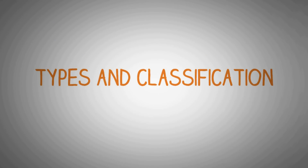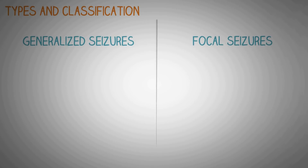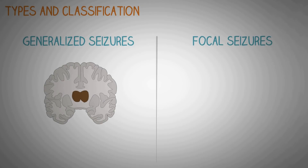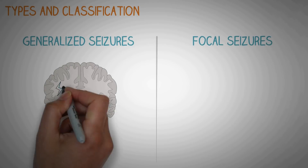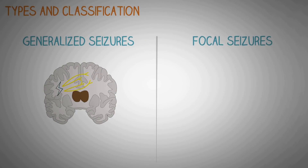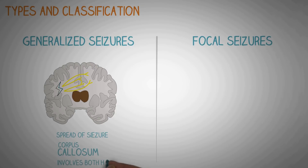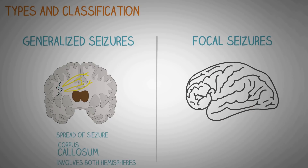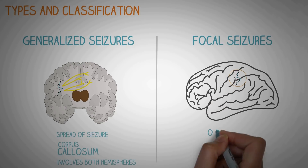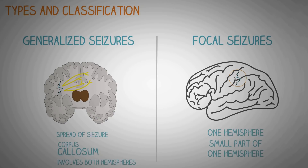Now let's talk about the various types and classification of seizures and epilepsy. Seizures are broadly defined into two categories: generalized and focal seizures. Generalized seizures usually start at one place in the brain and then, due to widespread neuronal networks, they spread to the whole cerebral cortex. One of the main structures that helps in this spread is the corpus callosum, which connects both hemispheres, allowing the seizure to spread to the other hemisphere. In comparison, focal seizures are confined to one area of the brain where they originate, usually one hemisphere or a small part of one hemisphere.